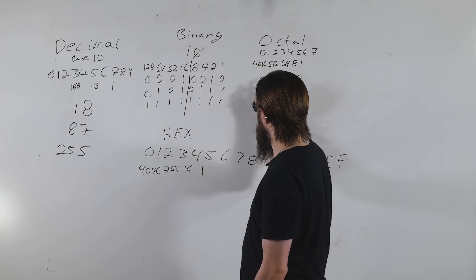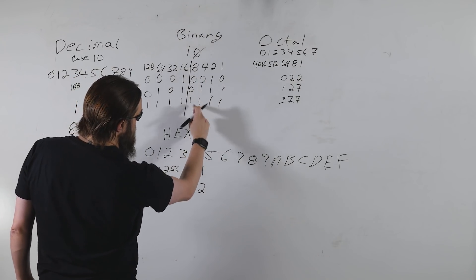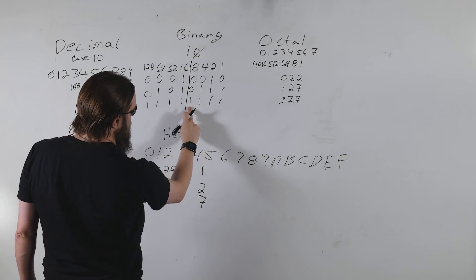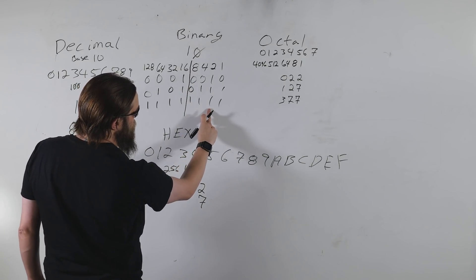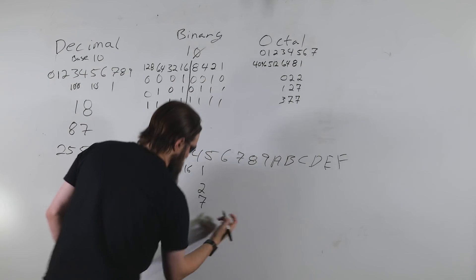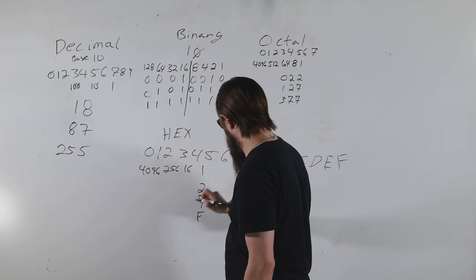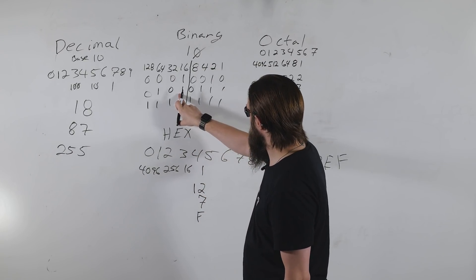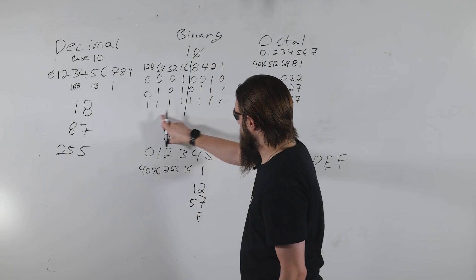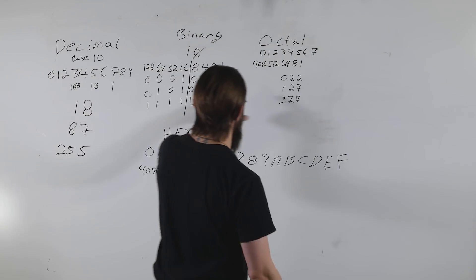Starting with the lower four bits: for 18 in binary that's 2; for 87 it's 7; for 255 it's F (since 8+4+2+1 = 15 = F). Then the upper four bits: for 18 that's 1, for 87 it's 5 (1+4), and for 255 it's also F. So 18 is 0x12, 87 is 0x57, and 255 is 0xFF.